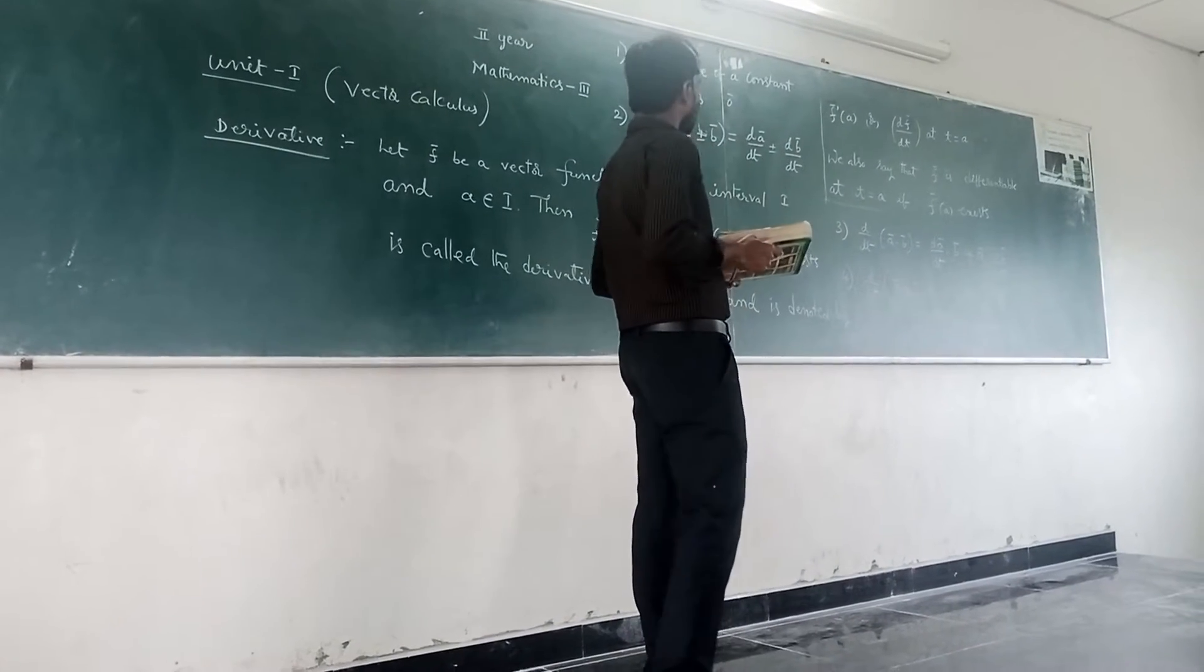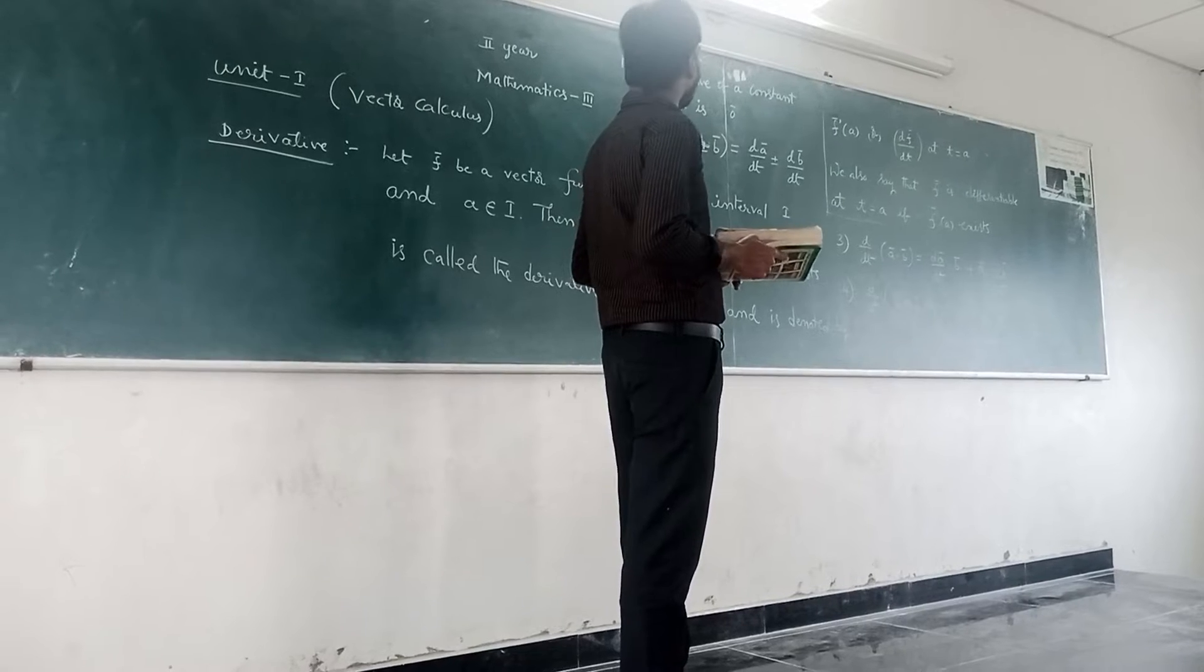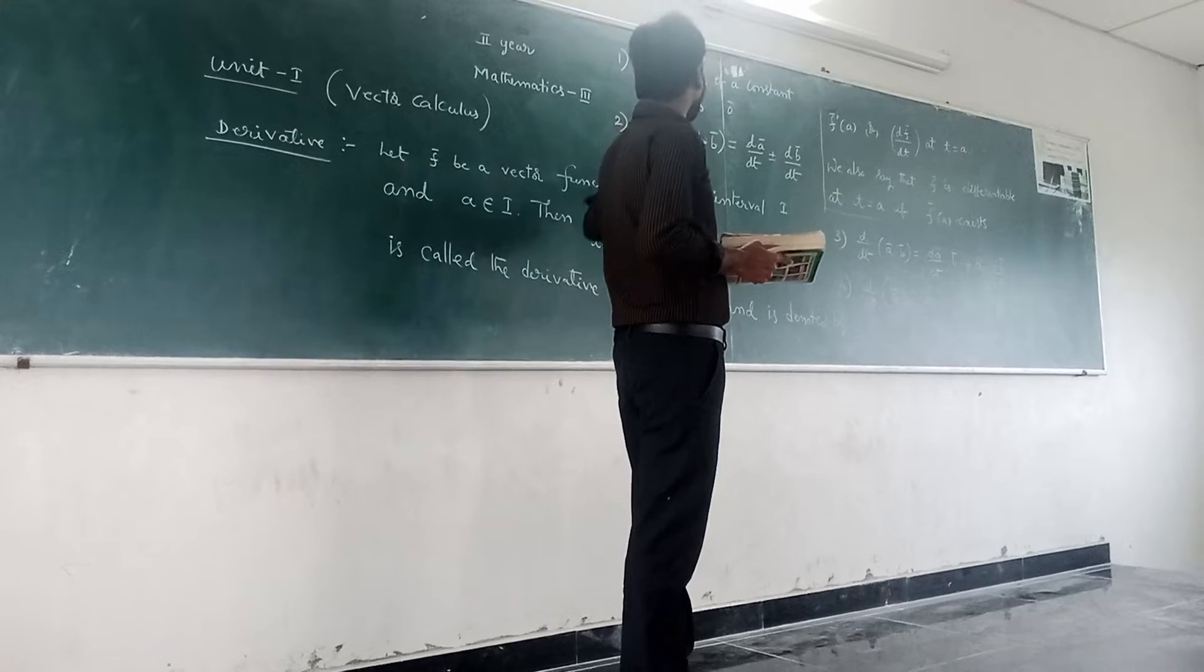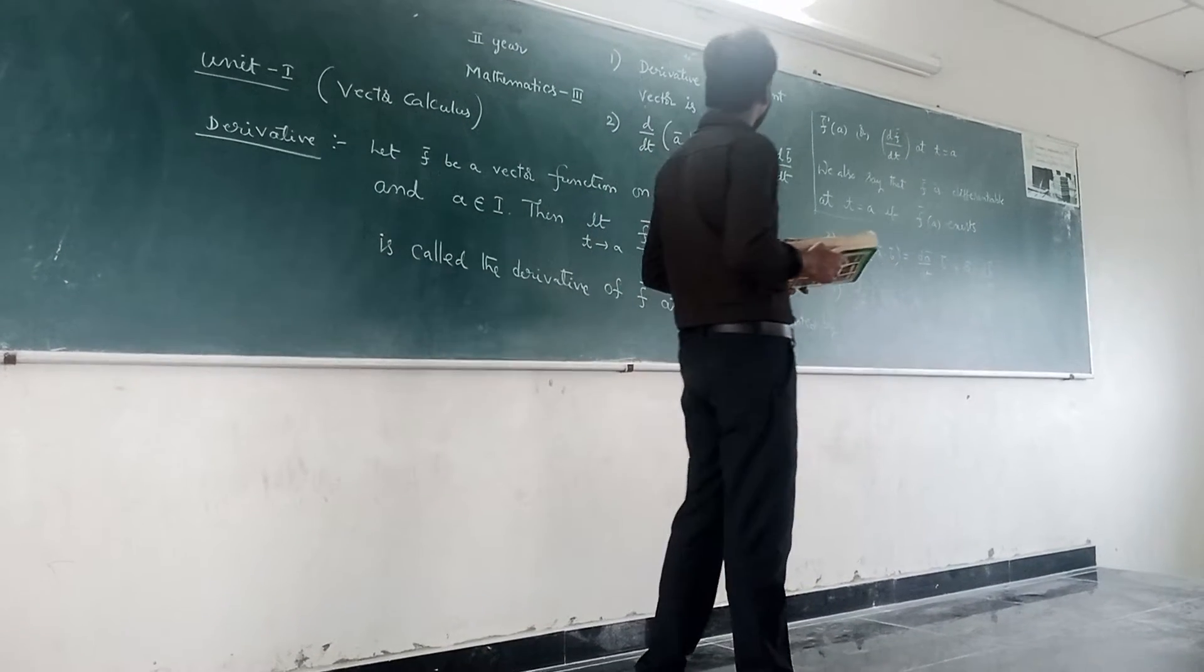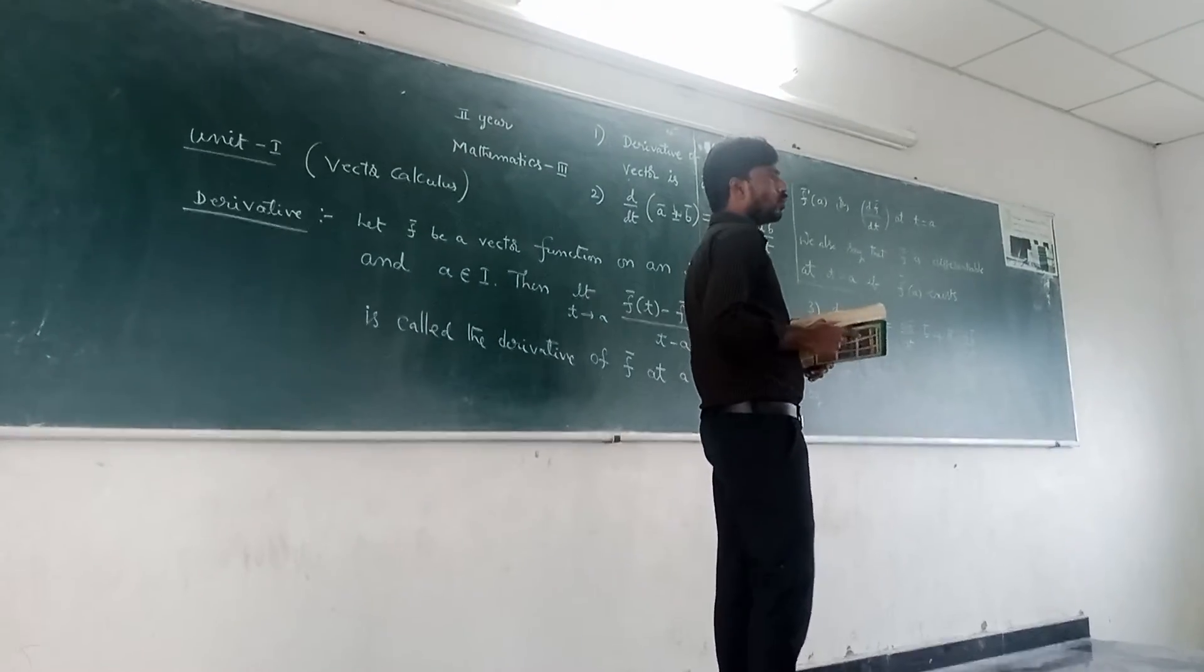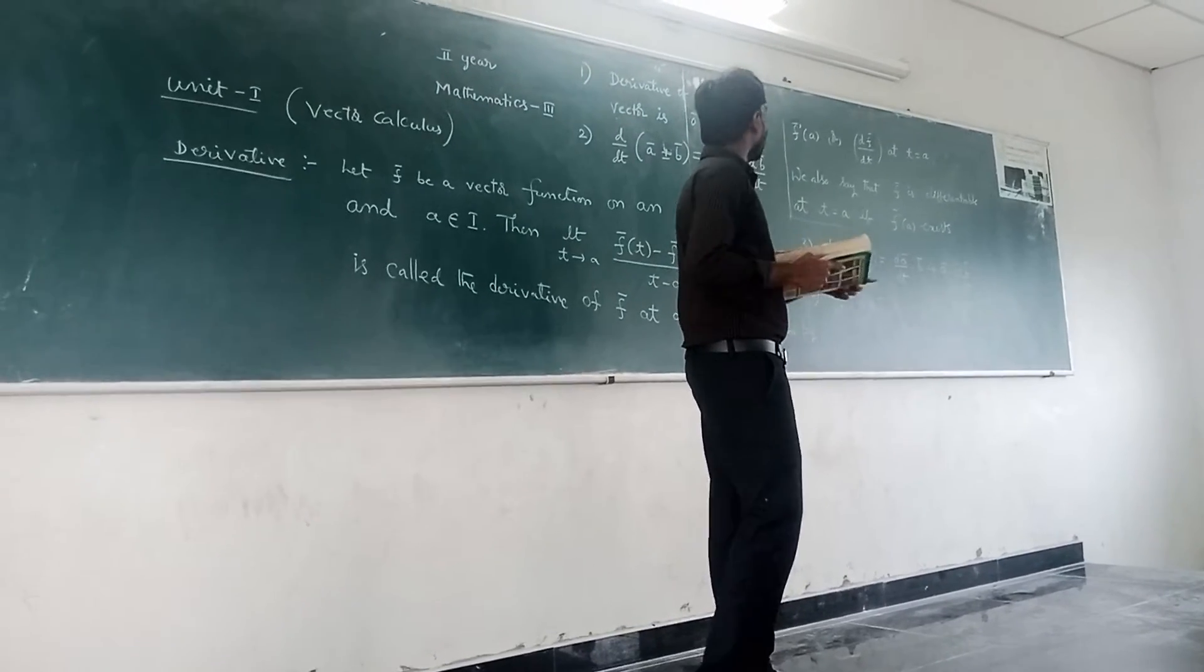So, some properties are there. First one, derivative of a constant vector is zero. And second one, derivative of a bar plus or minus b bar equals derivative of a bar with respect to t plus or minus derivative of b bar with respect to t.